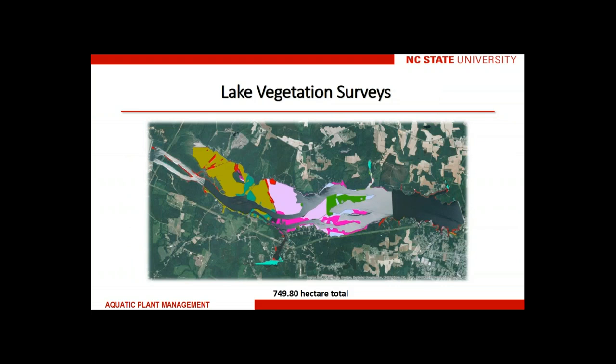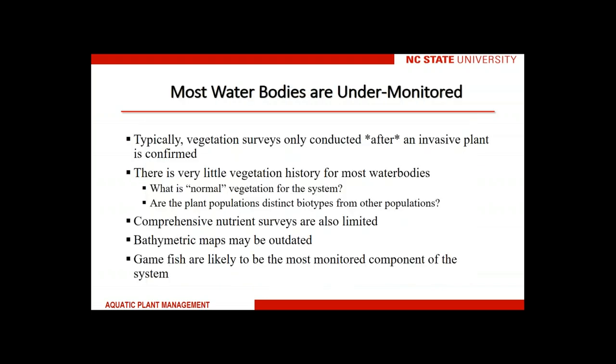That brings us to lake vegetation surveys, which are very important both for knowing the distribution of weed species but also what native or desirable species are present. This example from Roanoke Rapids Reservoir shows each different color representing a different species composition. The red color would be hydrilla alone, pink might be a mix of hydrilla and cabomba, while green might be a mix of Eurasian milfoil, hydrilla, cabomba, and other species. You can see multiple species composition sets within one reservoir.